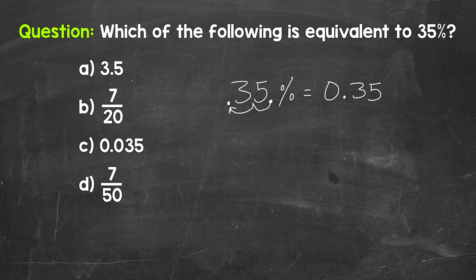Notice I wrote 0.35. That zero in the ones place makes it clear we have a decimal point here, and we don't have any whole numbers. That zero helps us see the decimal point, so we don't overlook it and read this as 35. Something to keep in mind when writing out decimals.